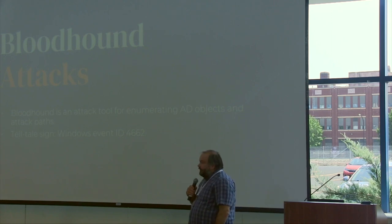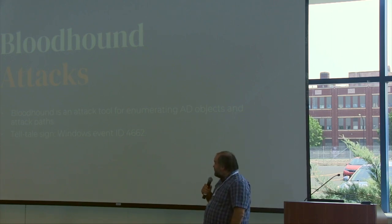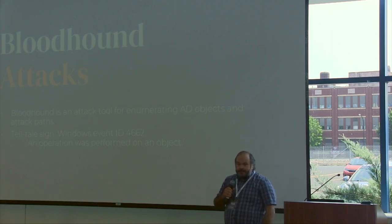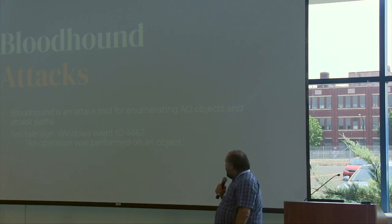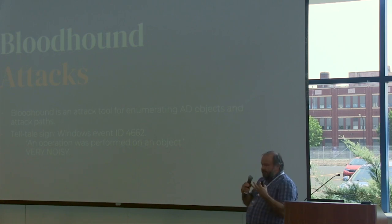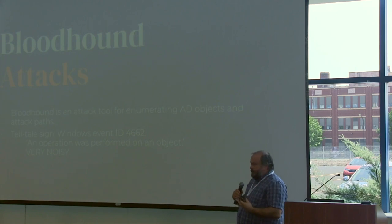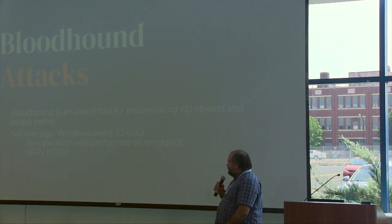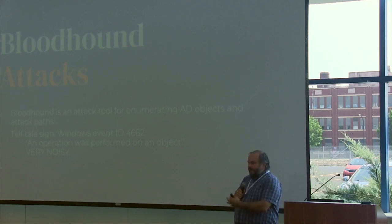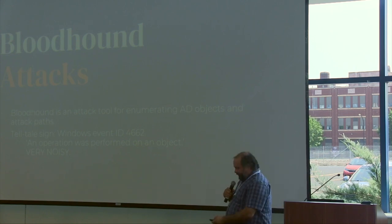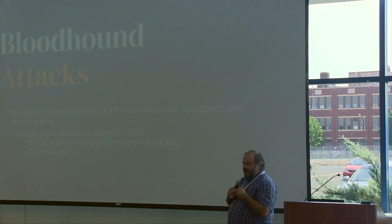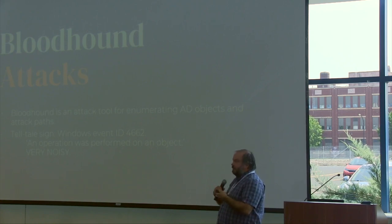The telltale sign in Windows of a Bloodhound attack would be Event ID 4662. Event ID 4662 tells you that an operation was performed on an object — which sounds about as interesting as dishwater. Because it is such a generic-sounding event, it's very noisy. Every time an operation is performed on an object in Active Directory, you get a 4662. So if you just turn on Event ID 4662 thinking it'll tell you about a Bloodhound attack, you're going to get tons of noise that fills up your SIEM storage and makes your life horrible. We need to find a way to reduce that noise and come up with a high-fidelity detection.